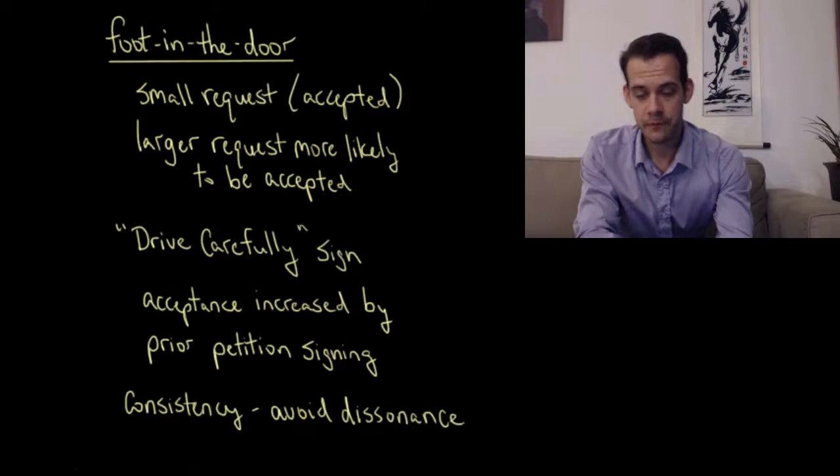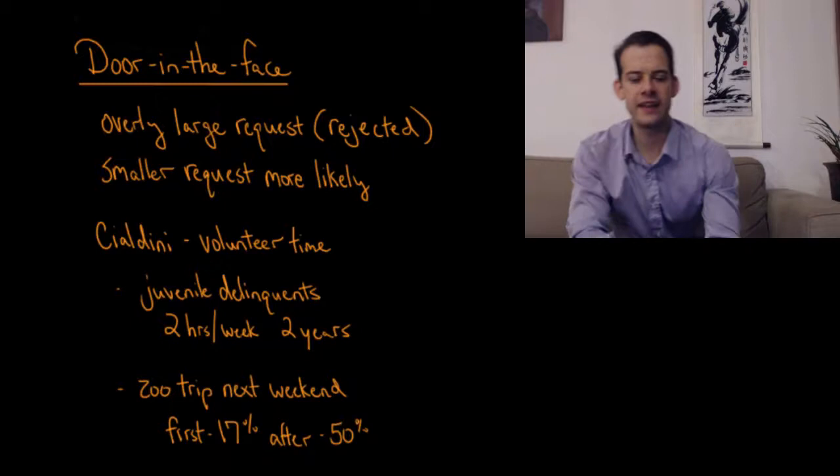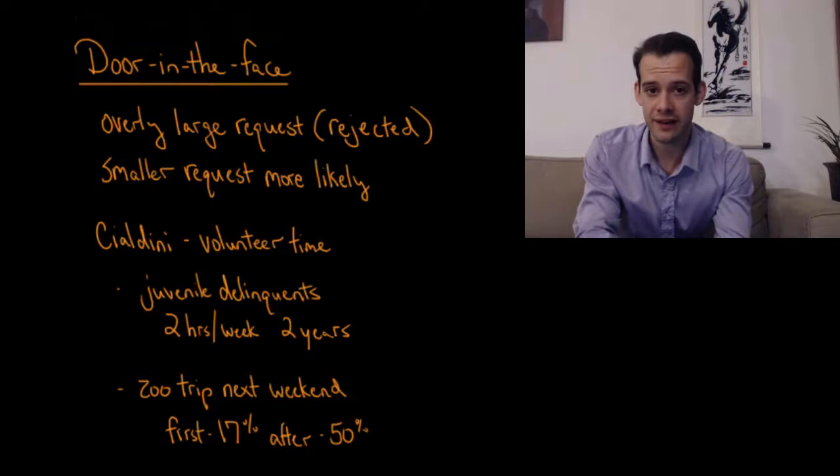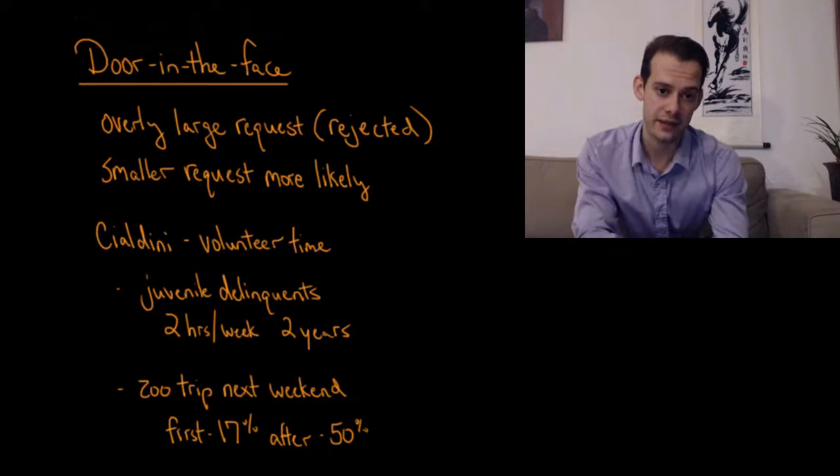We can also see the opposite technique which is called the door-in-the-face technique. In this case we start with a very large request, an overly large request that we know is going to be rejected, and then we follow this with a smaller request that's now more likely to be accepted.